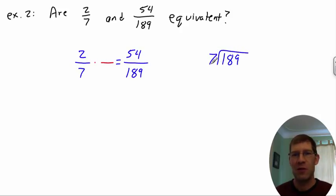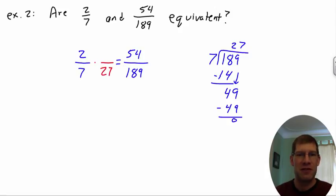So 7 doesn't go into 1, but 7 can go into 18 two times, 7 times 2 is 14, so if I subtract that there, then I get 4 left, and carry my 9 down, so I have 49, 7 goes into 49 seven times, with a remainder of 0, goes in there evenly. So in other words, I just found I need to multiply 7 by 27, and if I do that, I get this 189.